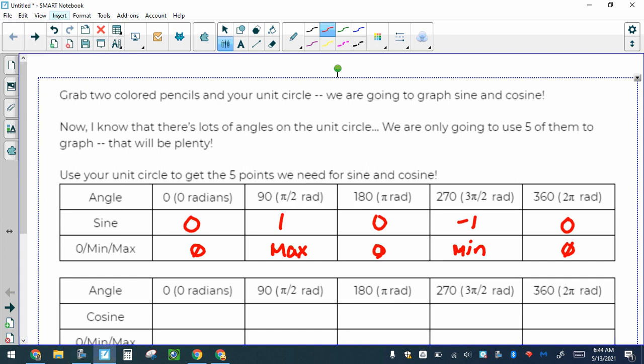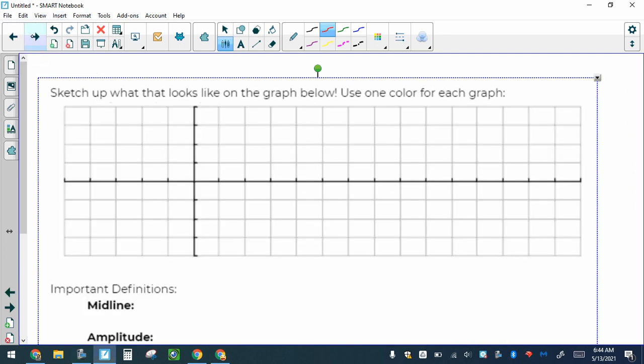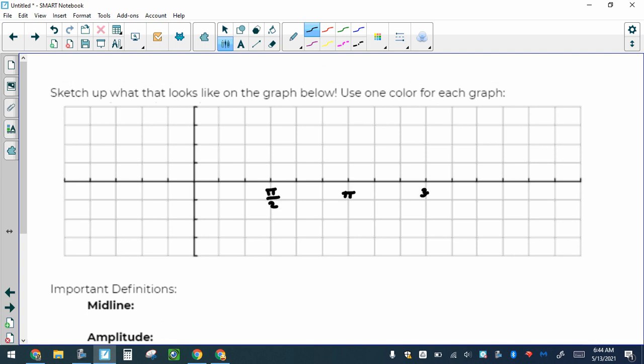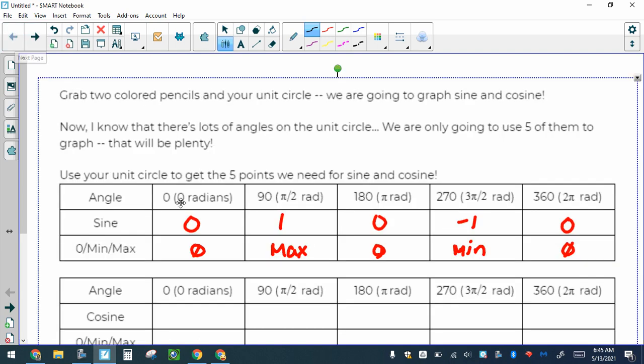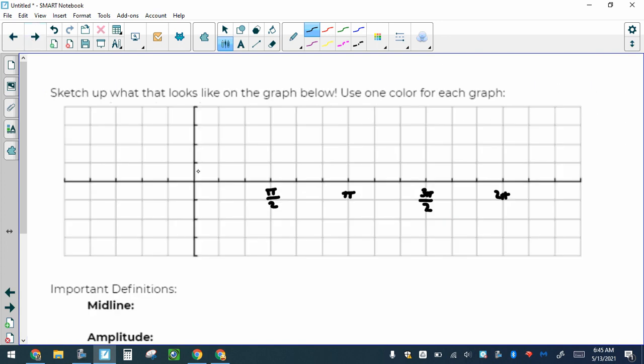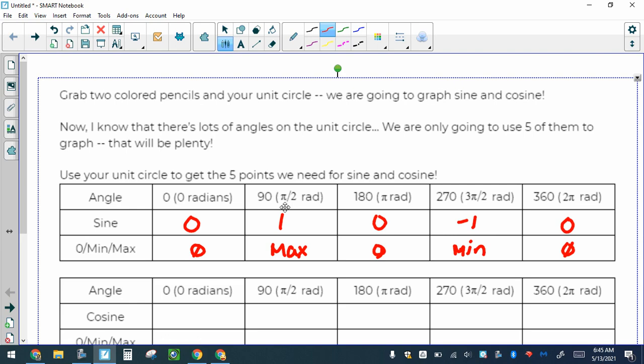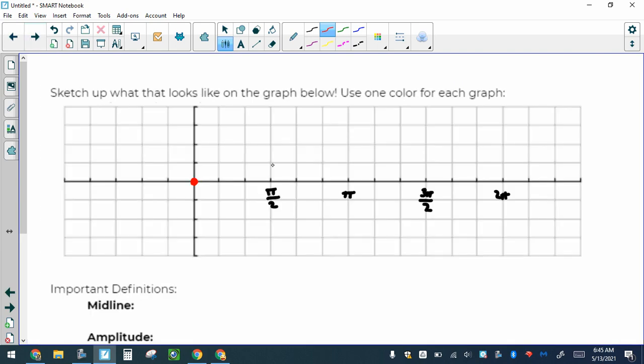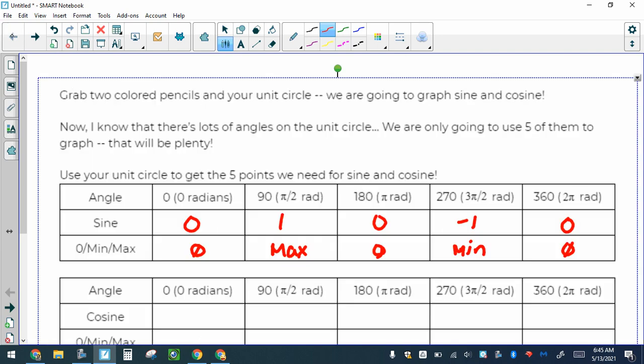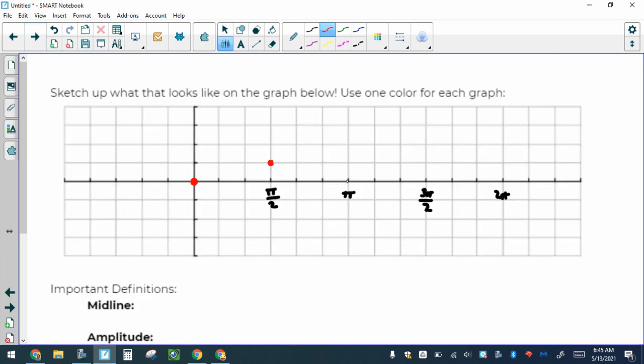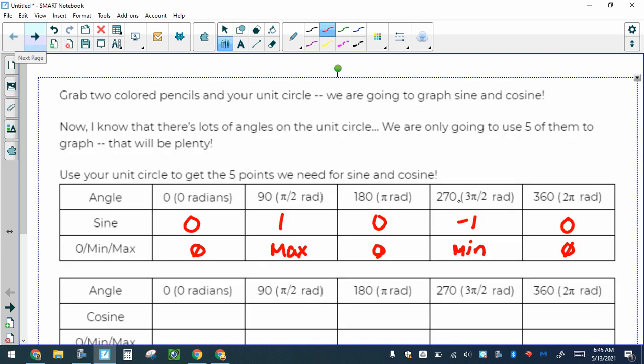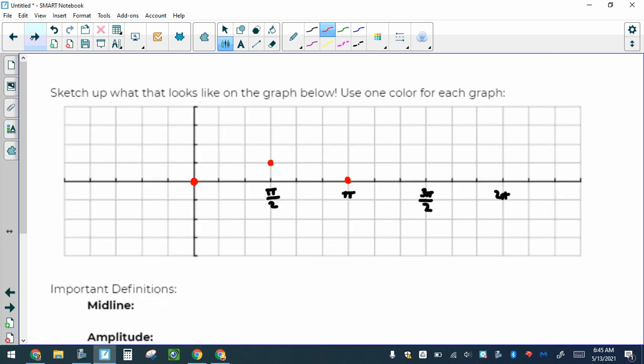So let's graph that. Mine is on the next page, and your graph is actually labeled here: π/2, π, 3π/2, and 2π. At 0 I want to graph 0. At π/2 I want to graph 1. At π I want to graph 0 again. At 3π/2 I want to graph -1, and then at 2π I want to graph 0 again.